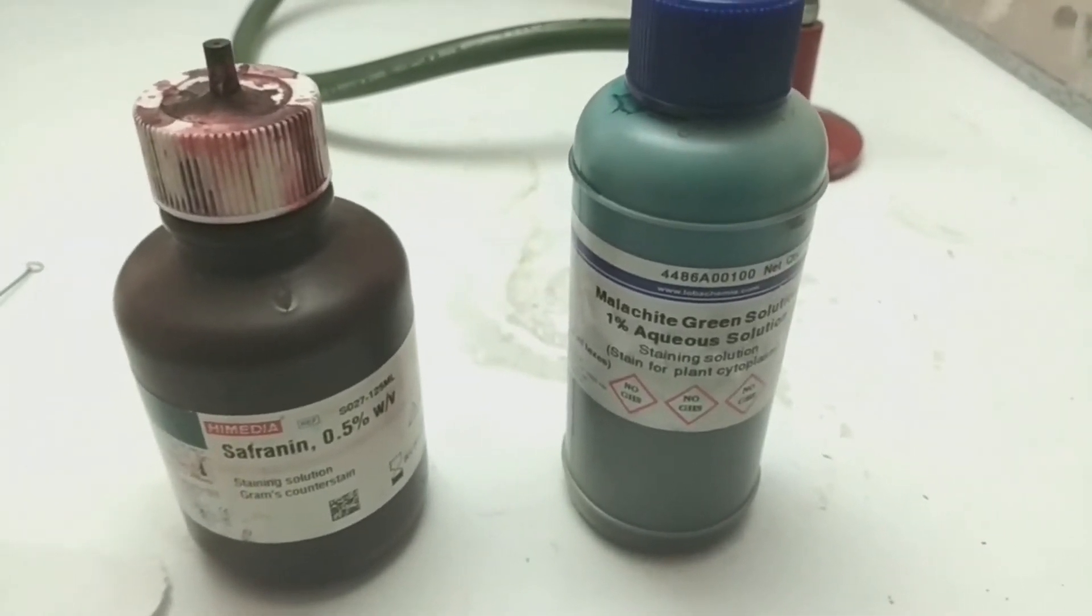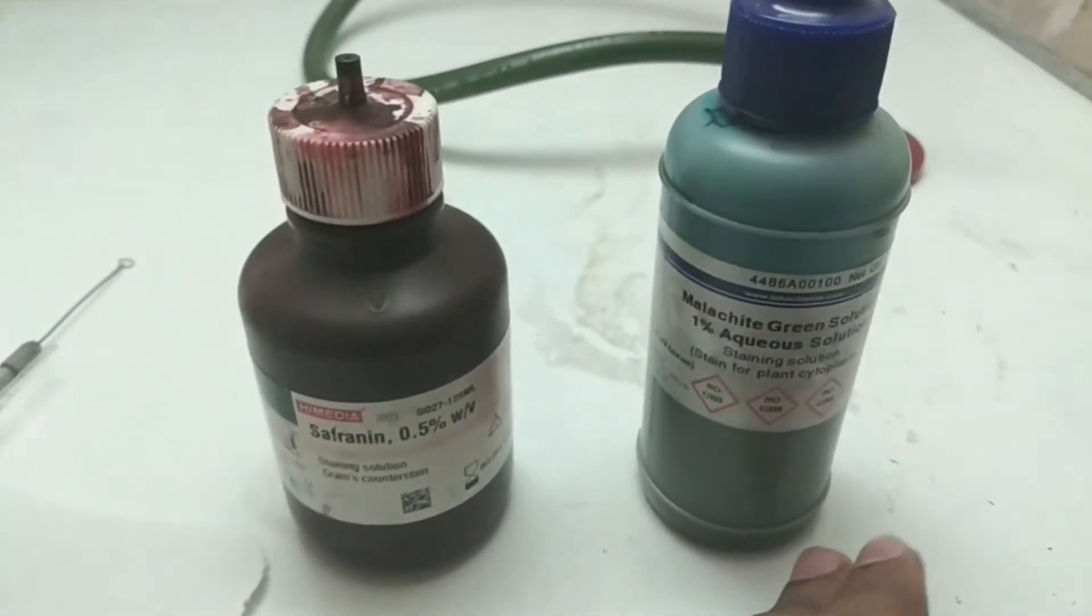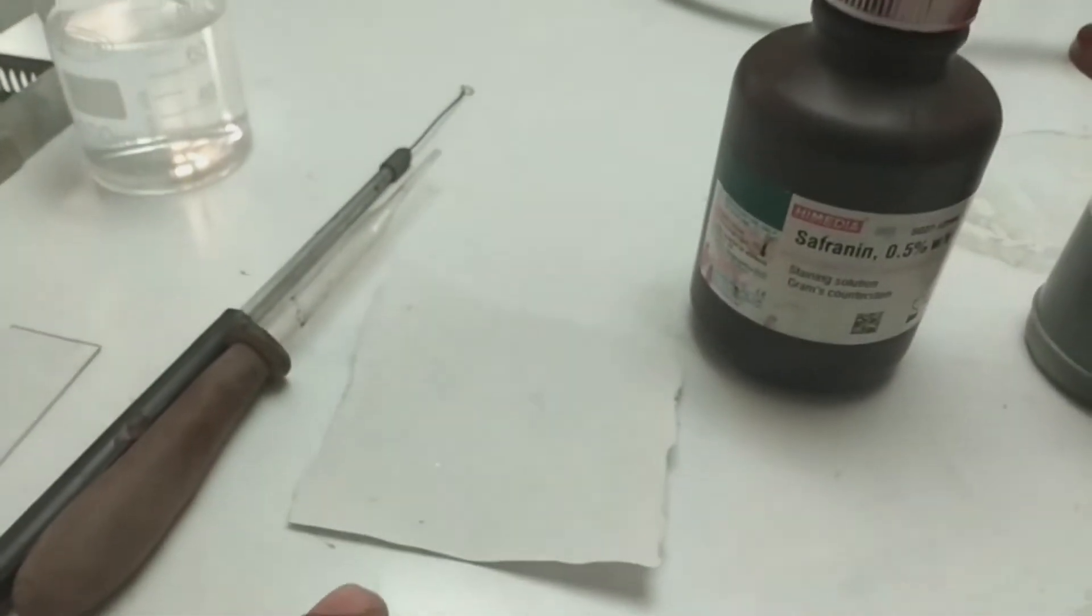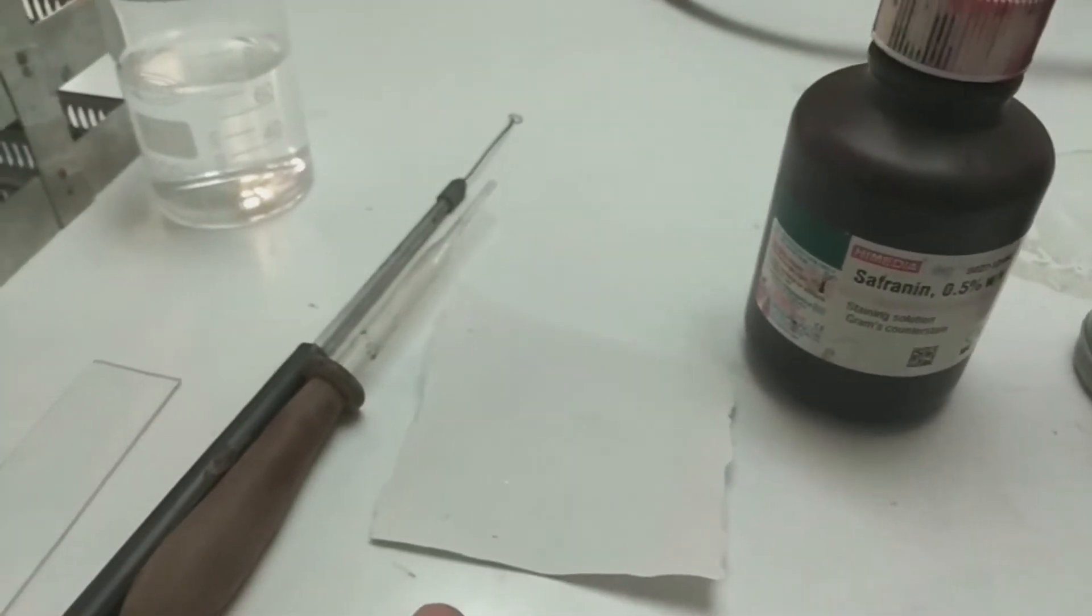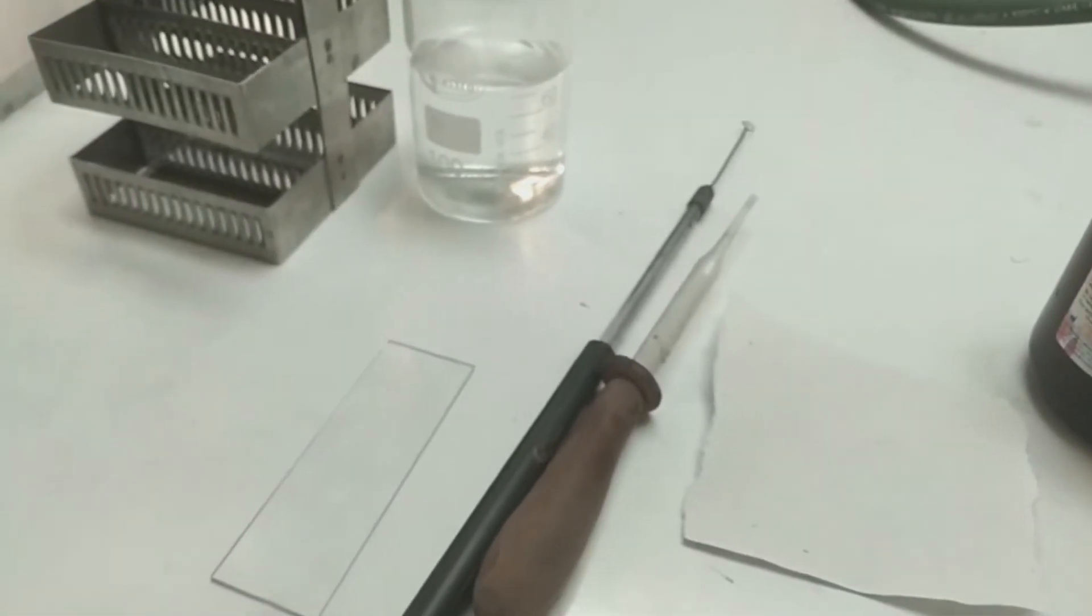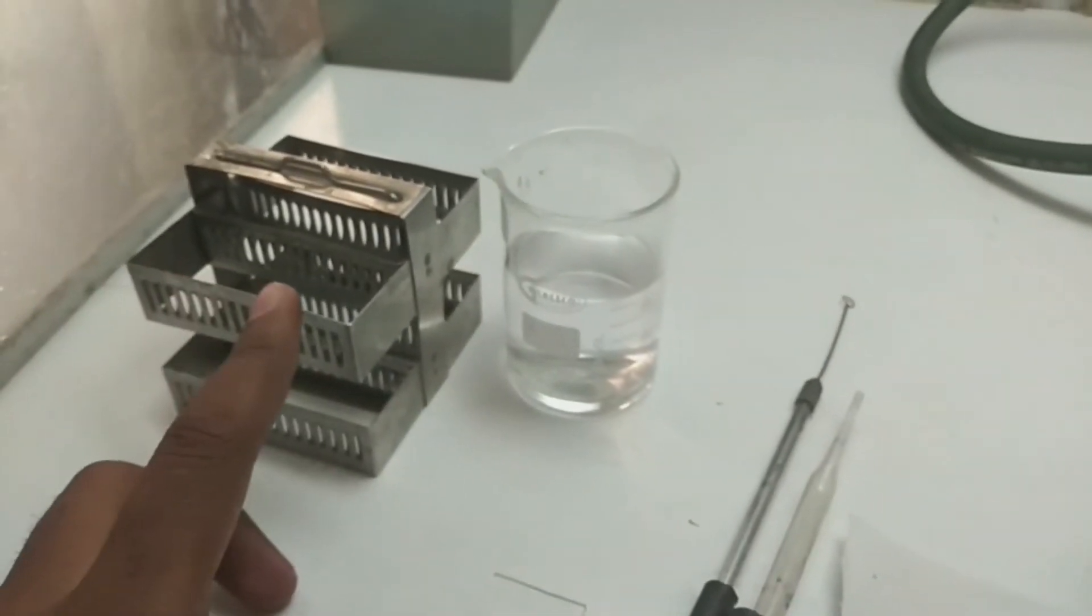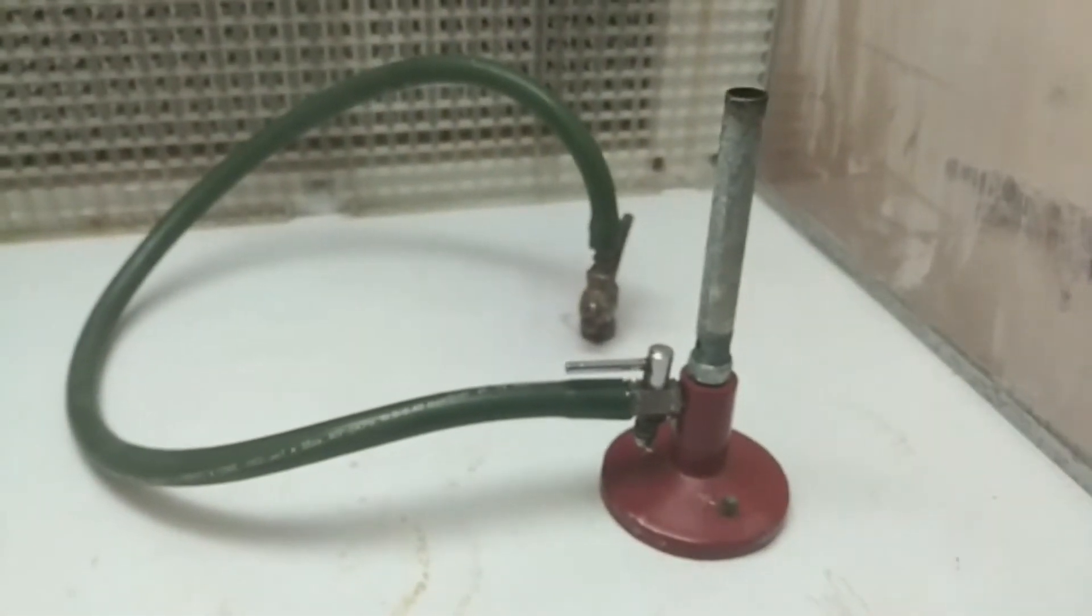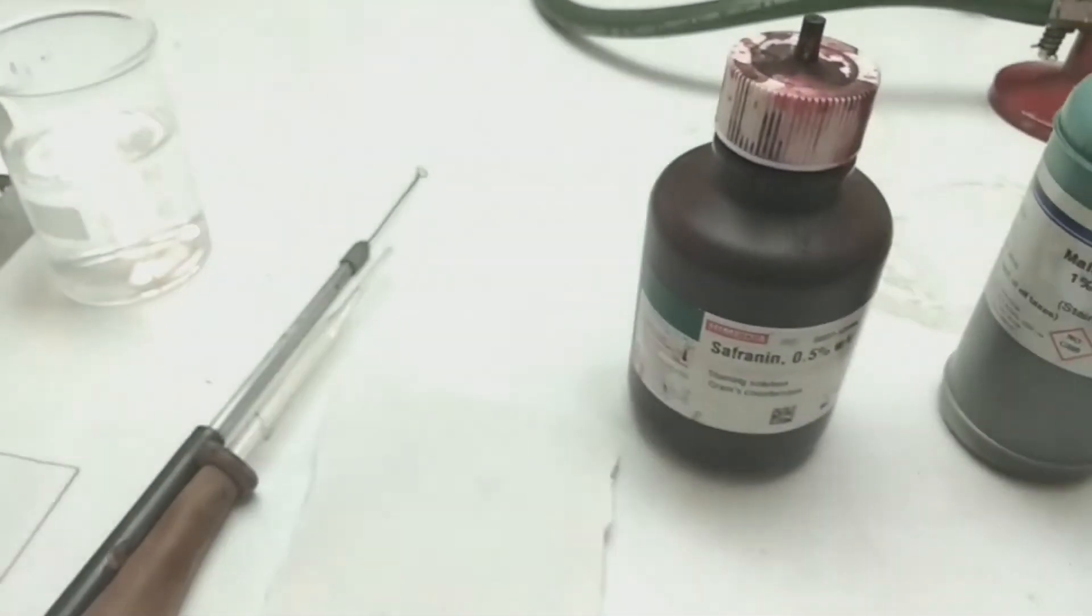The requirements for endospore staining: two important stains, safranin and malachite green for counter staining and pre-staining. Second, we require a filter paper for covering the smear. Third, a dropper. Fourth, an inoculum loop. Fifth, a clean grease-free glass slide, distilled water beaker, and a slide rack. A Bunsen burner for heat fixing the smear, and the culture of bacteria which we want to visualize the endospore.